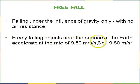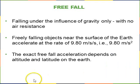Freely falling objects near the surface of the Earth accelerate at the rate of 9.80 meters per second per second, which is 9.8 meters per second squared. The exact value depends on altitude and latitude on Earth. So if you go up to the top of a high mountain, it might be 9.79 meters per second squared, or 9.81 meters per second squared way down at sea level.